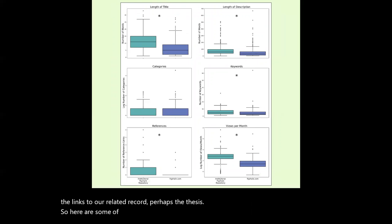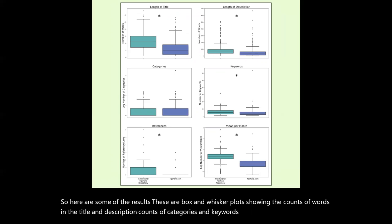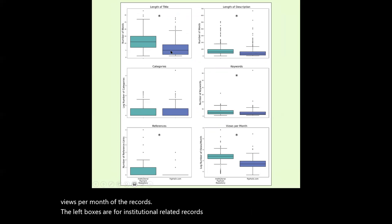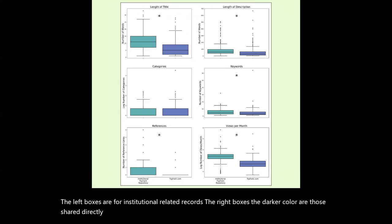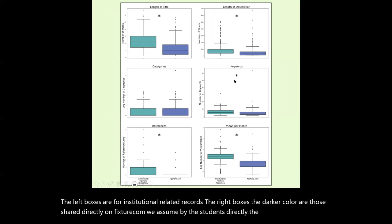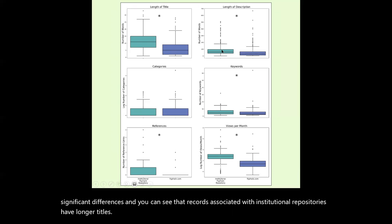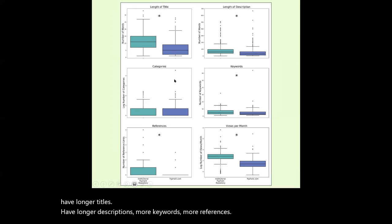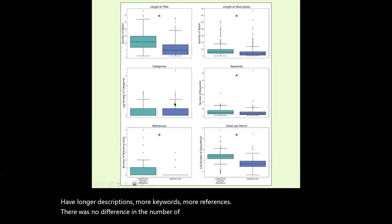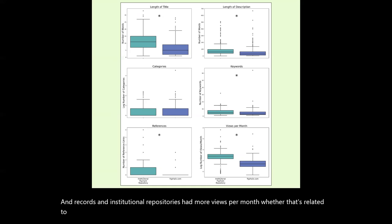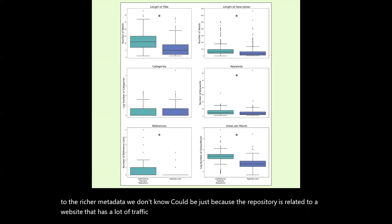Here are some results. These are box and whisker plots showing word counts in the title and description, counts of categories and keywords, counts of references, and views per month. The left boxes are for institutional repository records; the right darker-colored boxes are those shared directly on figshare.com, assumed by students. Asterisks indicate significant differences. Records associated with institutional repositories have longer titles, longer descriptions, more keywords, and more references. There was no difference in the number of categories. Records in institutional repositories also had more views per month — though whether that's related to richer metadata or to the university website's existing traffic, we don't know.